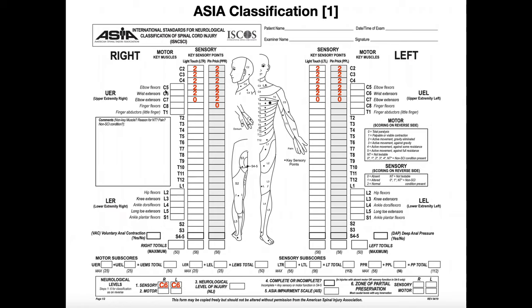The clinically testable myotomes are: C5 is elbow flexion, C6 is wrist extension, C7 is elbow extension, C8 is finger flexion, and T1 is finger abduction. For the lower extremity: L2 is hip flexion, L3 is knee extension, L4 is ankle dorsiflexion, L5 is great toe extension, and S1 is ankle plantar flexion. These myotomes have to be clinically testable on individuals who potentially have paralysis or exceptional weakness from a spinal cord injury.